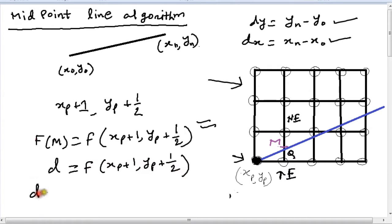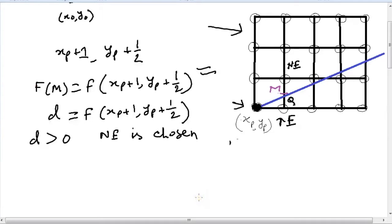Now if d is greater than 0, then that means we choose the pixel NE, because d greater than 0 means our line is closer to the pixel NE than to pixel E. Otherwise, we choose pixel E.